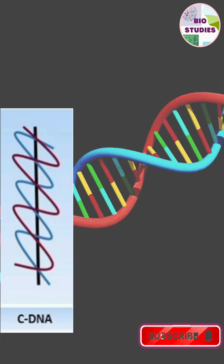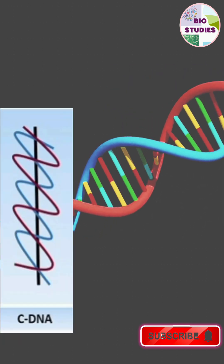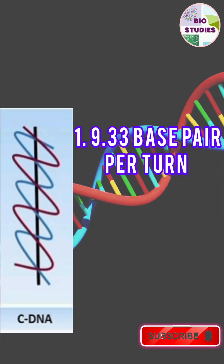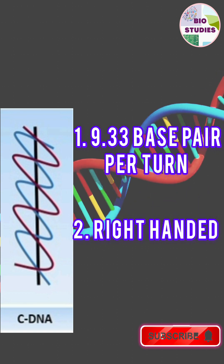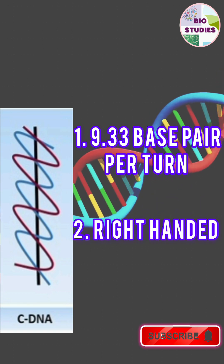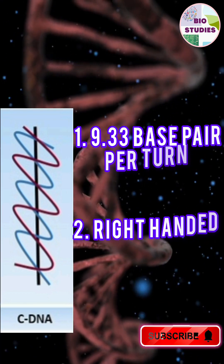Next is C-DNA. There are 9.33 base pairs present per turn and it is also right-handed.